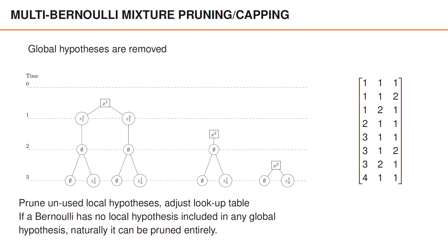Note that if a Bernoulli does not have any local hypotheses included in any of the global hypotheses or multi-Bernoullis, then this Bernoulli can be removed entirely.